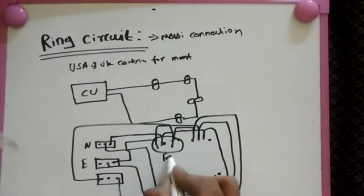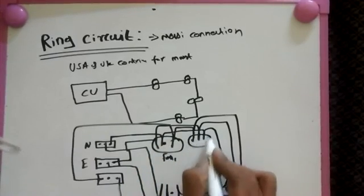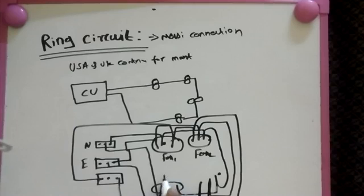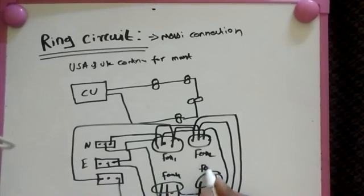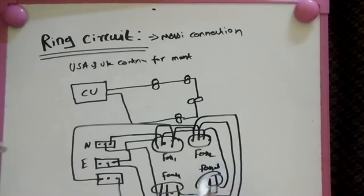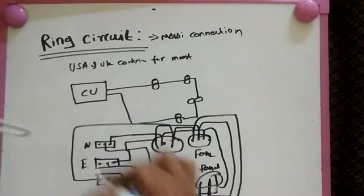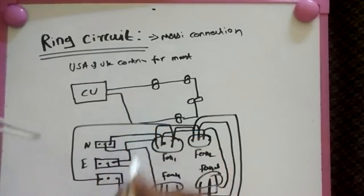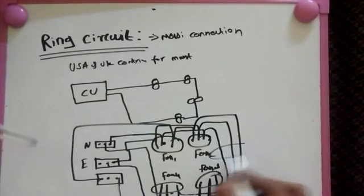Then now phase, that means line, starts here, comes here, comes here. This is fan 1, this is fan 2, this is fan 4, this is fan 3. This is the way of connecting the ring circuit. If in case some problem occurs here or here.